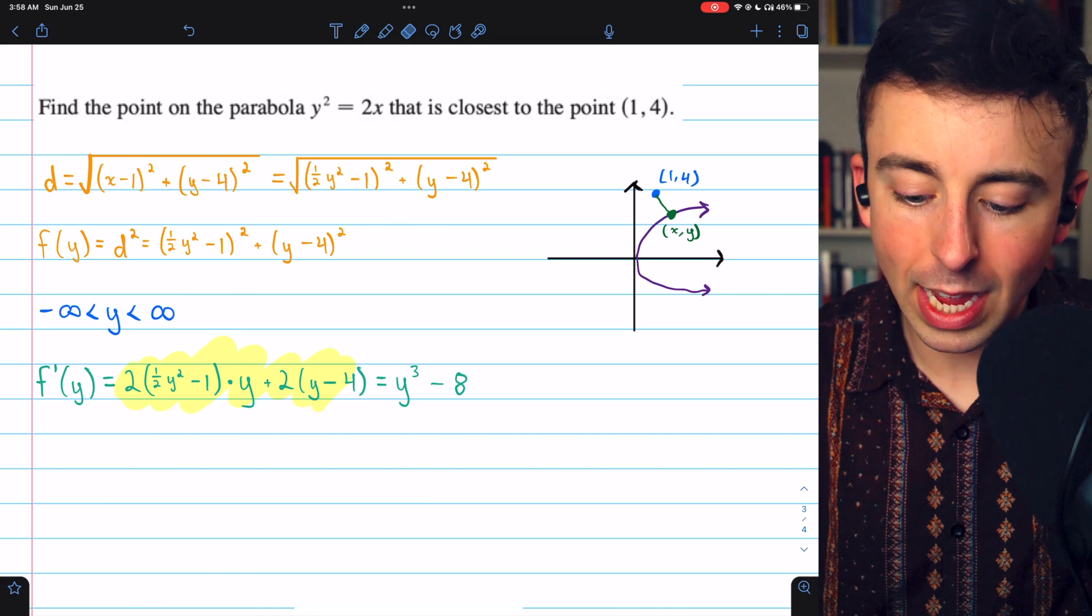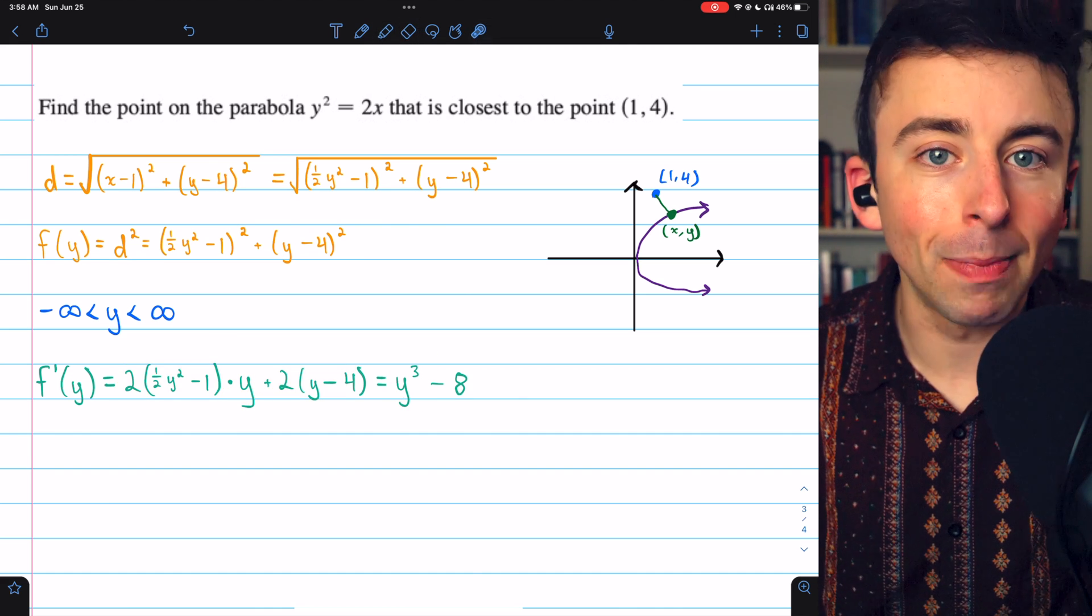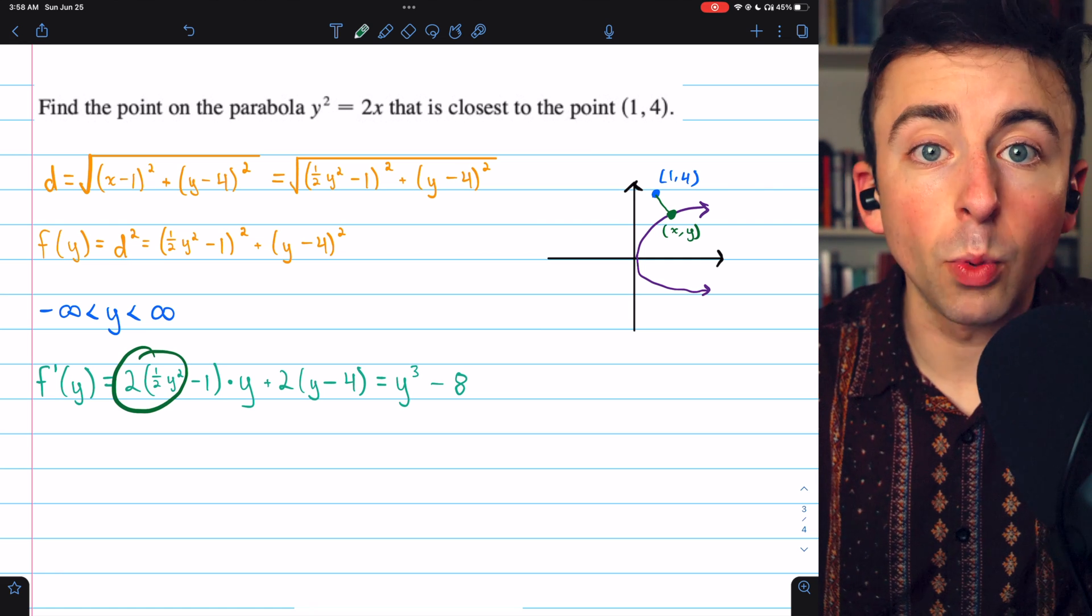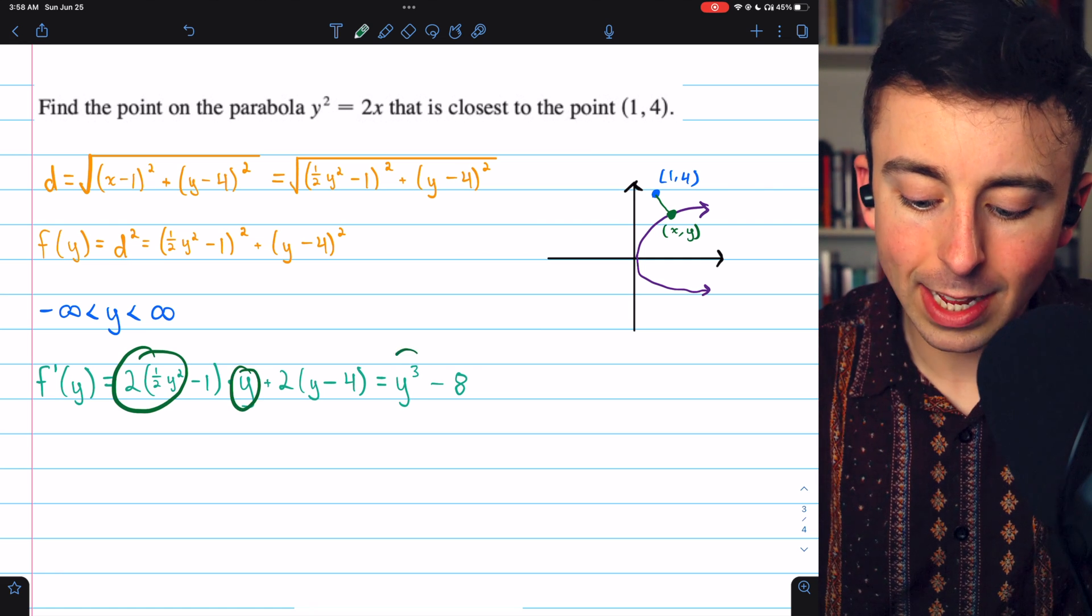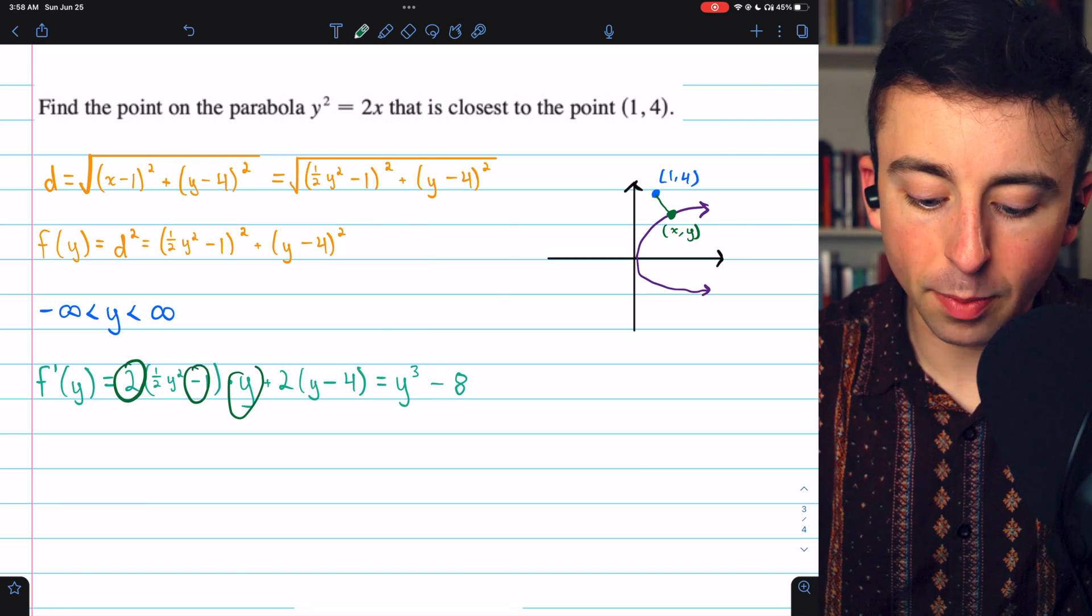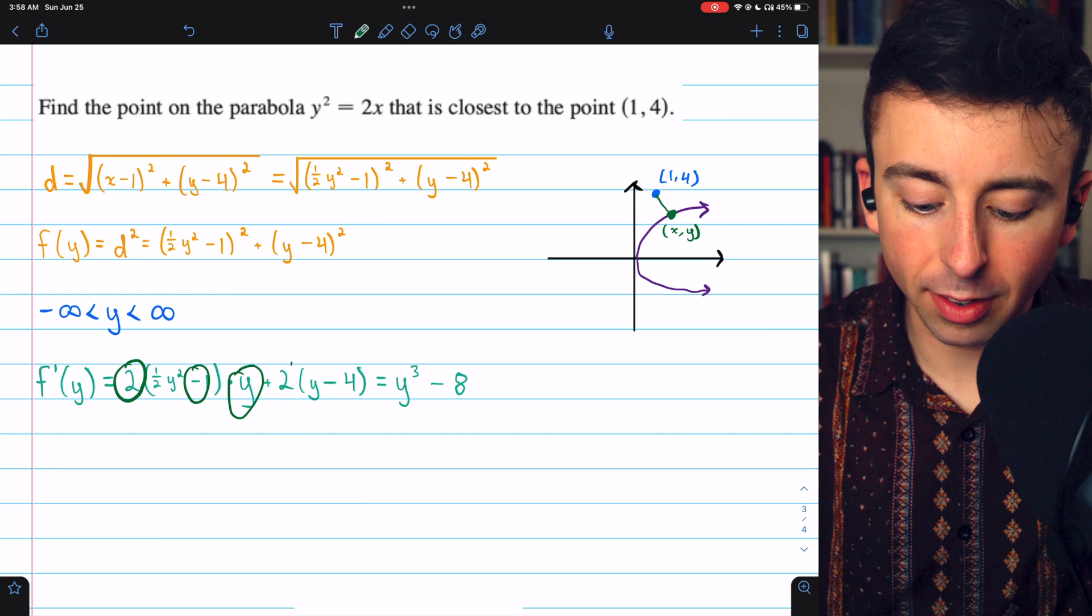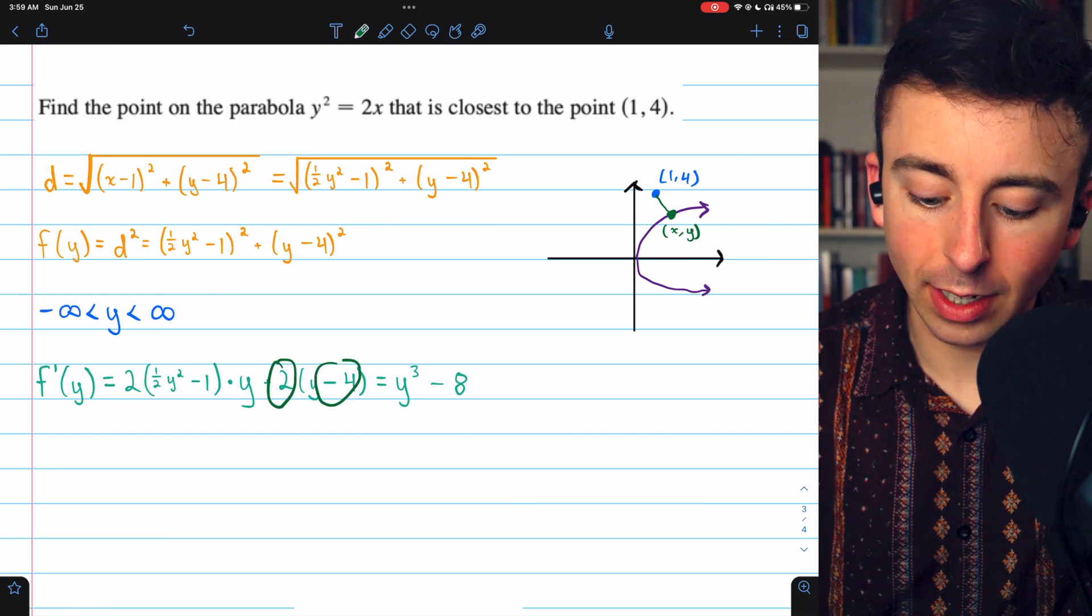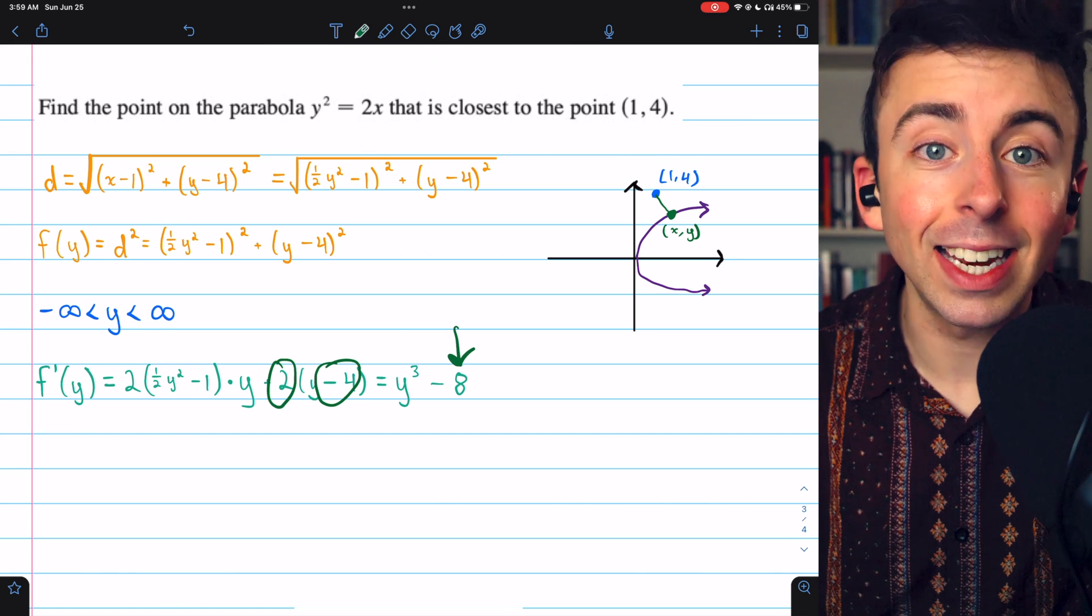Now if we simplify this, we end up getting y cubed minus 8. That's because 2 times a half y squared is y squared, multiplied by y gives us y cubed. But then 2 times negative 1 times y is negative 2y, which cancels out with that plus 2y. But then also we have 2 times negative 4, and that's where we get the minus 8.